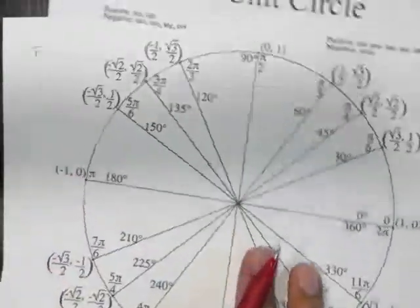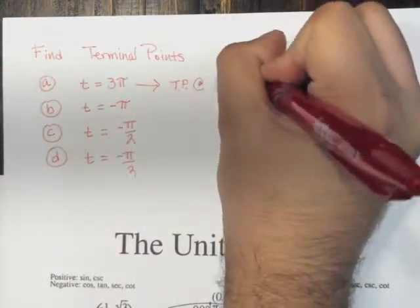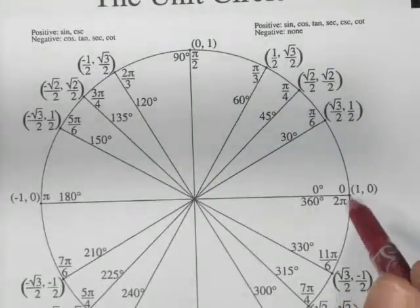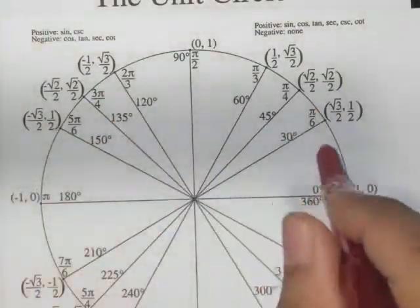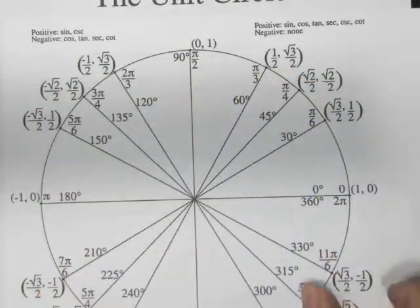Okay, so the terminal point then being negative 1, 0. So the terminal point for 3π is negative 1, 0. Now notice, we were always going counter-clockwise. Okay, so to measure a positive angle, you always go counter-clockwise.